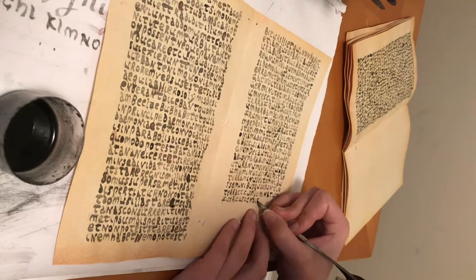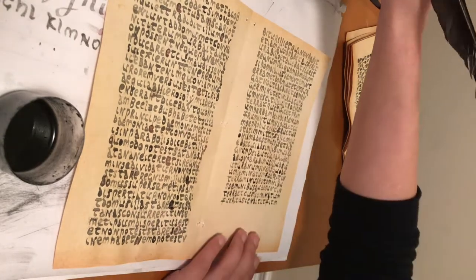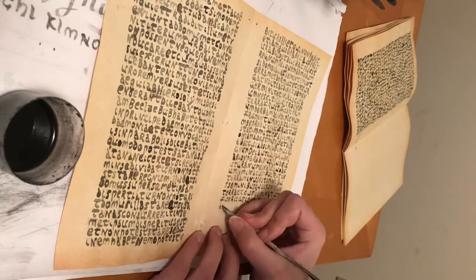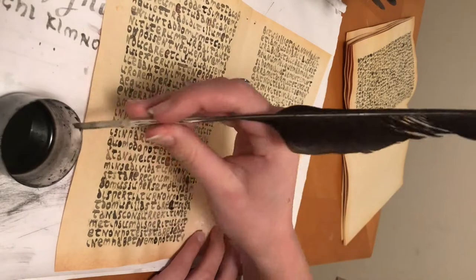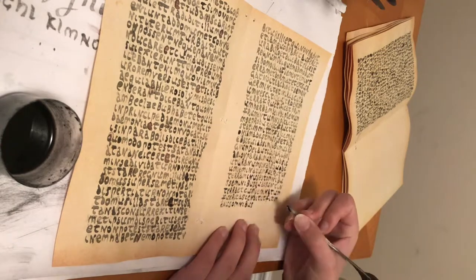A Codex is better than a roll in many respects. In a Codex, both sides of the page are written on, which saves space and is more economic. Codices are also very easy to transport and to use.